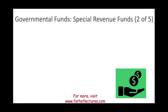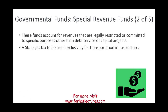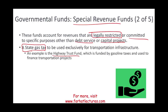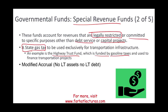The second type of governmental fund is special revenue funds. These are funds used specifically for a legally restricted or committed purpose, other than debt service or capital projects. An example is a state gas tax, where the tax collected is specifically used for transportation infrastructure or highway maintenance, placed in a highway trust fund. Governmental funds use modified accrual.